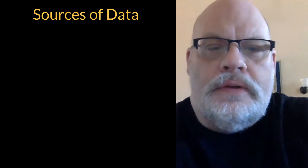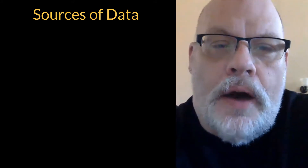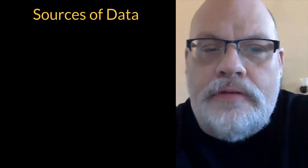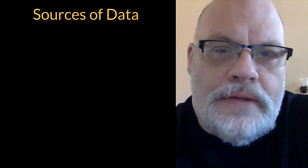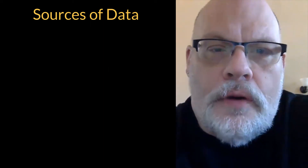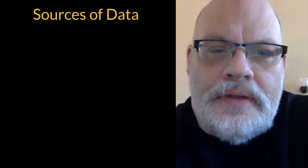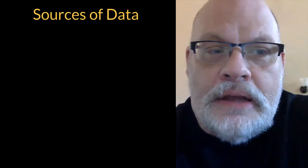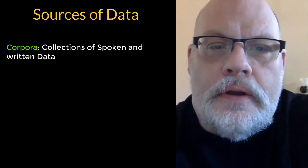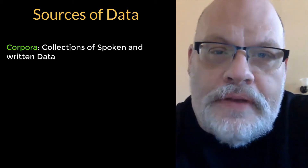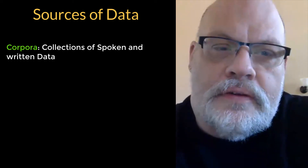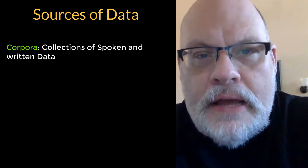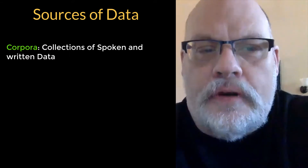In the last unit, we talked about how we're going to store our hypotheses in terms of rules and grammars, but what we haven't yet talked about is how do we go about gathering the data we need in order to figure out what those rules and grammars might look like. There are some obvious sources of data that syntacticians can use. They can use collections of spoken and written data — these are called corpora.